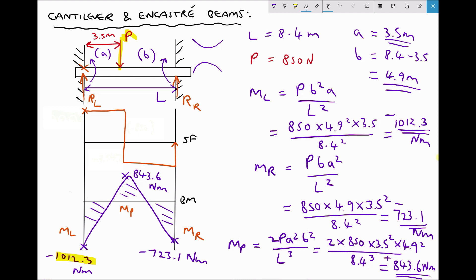In the previous video we looked at a scenario where we had an encastre beam subjected to a point load of 850 newtons at a distance of 3.5 meters from the left-hand support. The maximum bending moment acting on the beam was 1012.3 newton meters. In this video, we determine the position of point load P that leads to the maximum bending moment, which will actually be larger than 1012.3 newton meters.